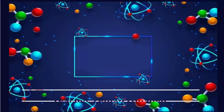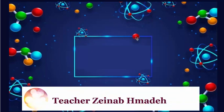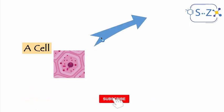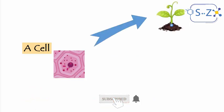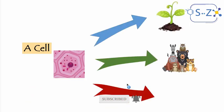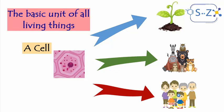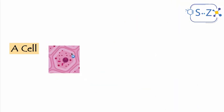Welcome to a new video. Our video today is about cell transport. This is a cell — a cell is a basic unit of all living things such as plants, animals, and humans. So all living things are made of cells, and we call the cell the basic unit of all living things.